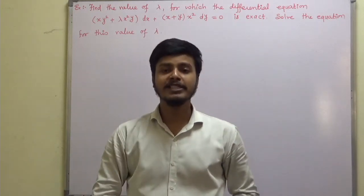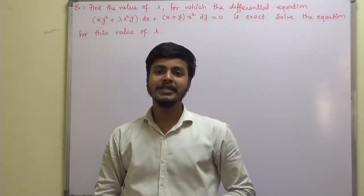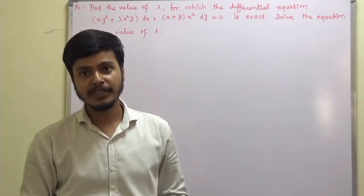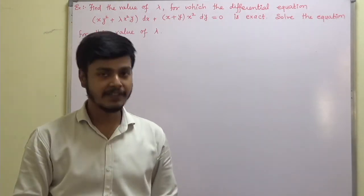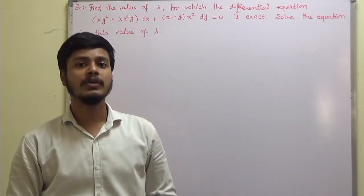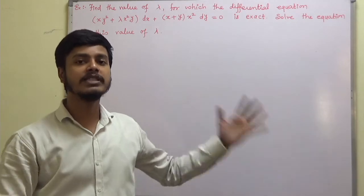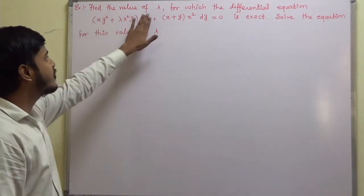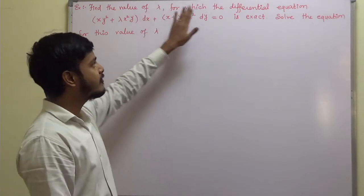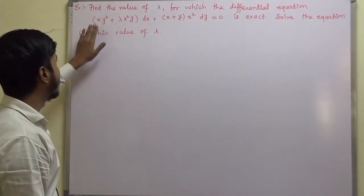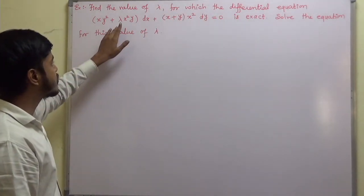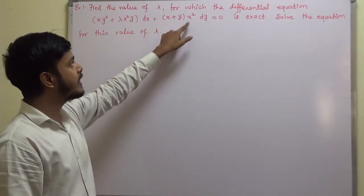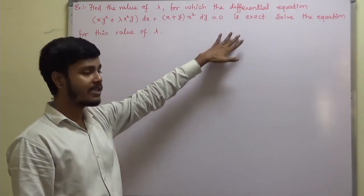Hello and welcome to this learning video. In this learning video we are going to take an example which is again of a different variety. This problem says: find the value of lambda for which the differential equation x y squared plus lambda into x squared y dx plus x plus y into x squared dy equals 0 is exact.